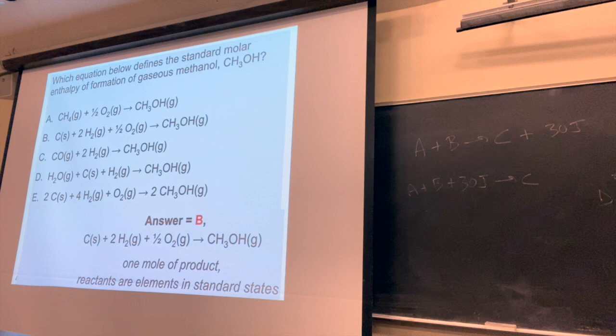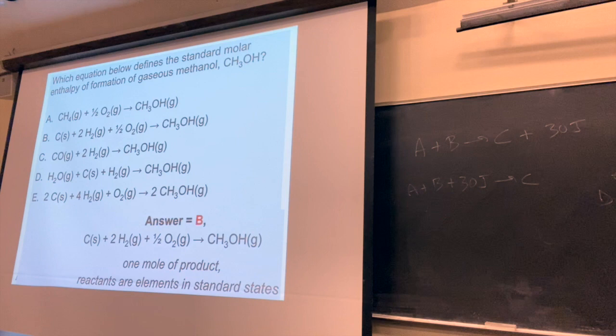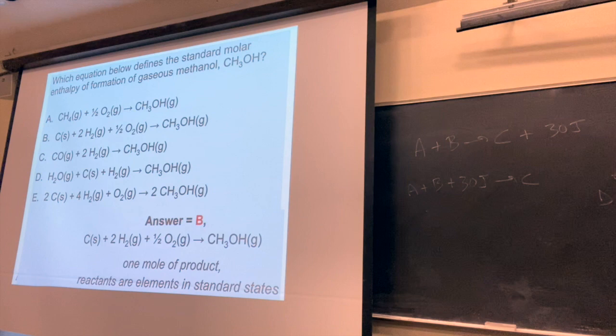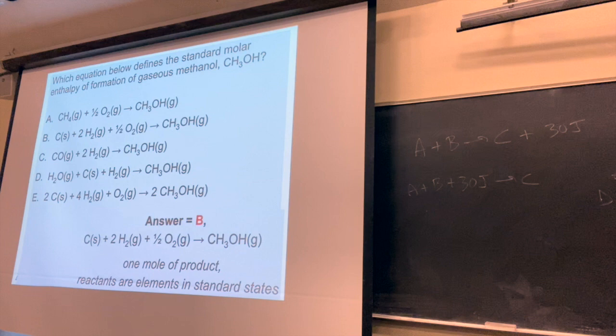We can use fractions when calculating the enthalpy of formation — that's the key phrase. There are other types of enthalpies, but formations specifically require one mole of product, which is when you'll use fractions. The diatomics are the ones that usually lead to fractions. A student asks why we need these. If you know all the enthalpies of formation, it is much easier to find the enthalpy change for a reaction.